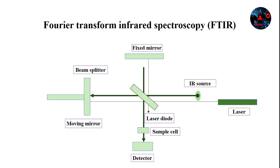Radiation from the source reaches the detector after it passes through the interferometer. The signal is amplified and converted to a digital signal by the analog to digital converter and amplifier, after which the signal is transferred to the computer where the Fourier transform is carried out.